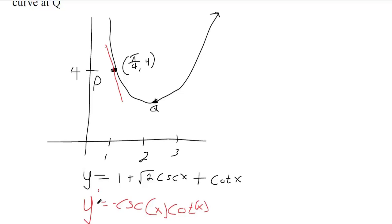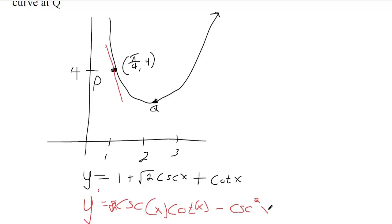I forgot my square root of two out front, so this should be negative square root of two cosecant x cotangent x. And the derivative of cotangent x should be negative cosecant squared x. So that's the derivative.